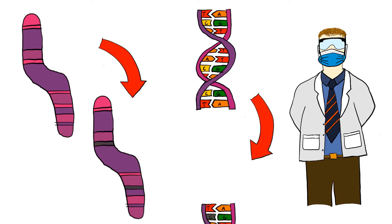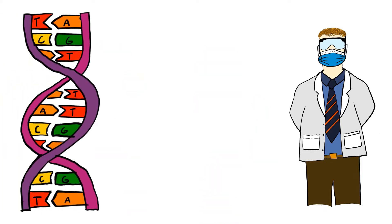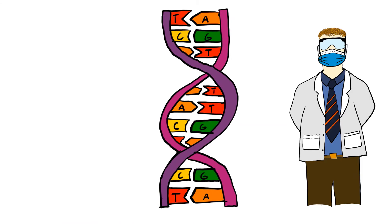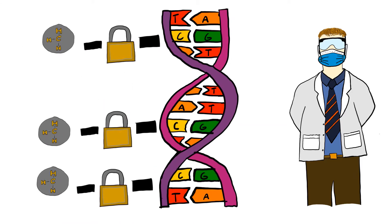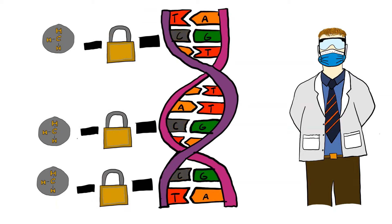Imprinting is the epigenetic process of silencing genes. When you inherit chromosomes, some of these genes will be silenced through methylation, where methyl groups attach to the cytosine in DNA and lock it up, so the genes that have been methylated cannot be expressed.